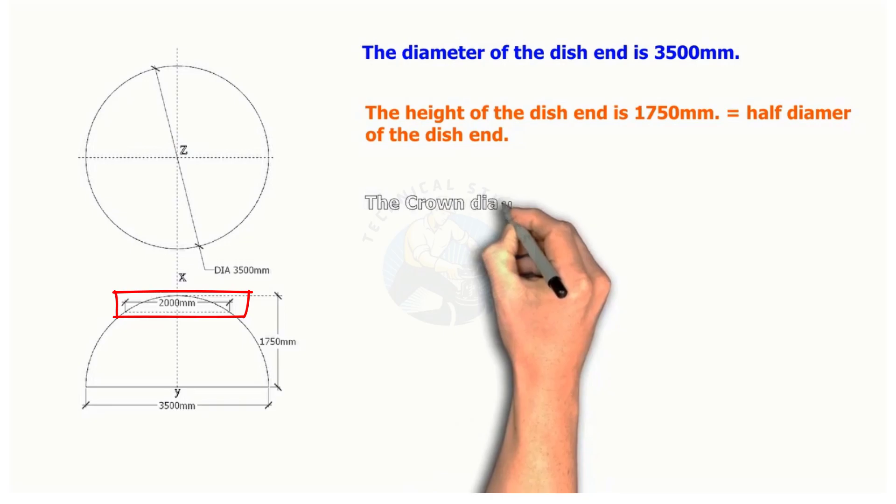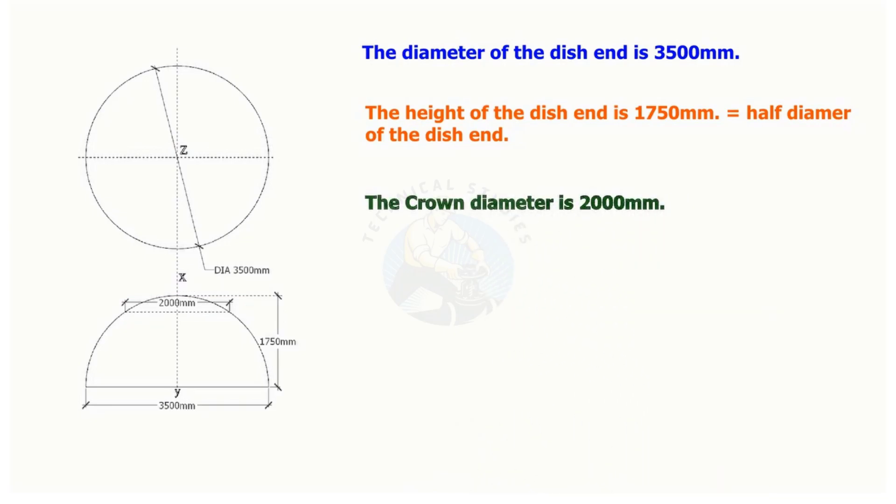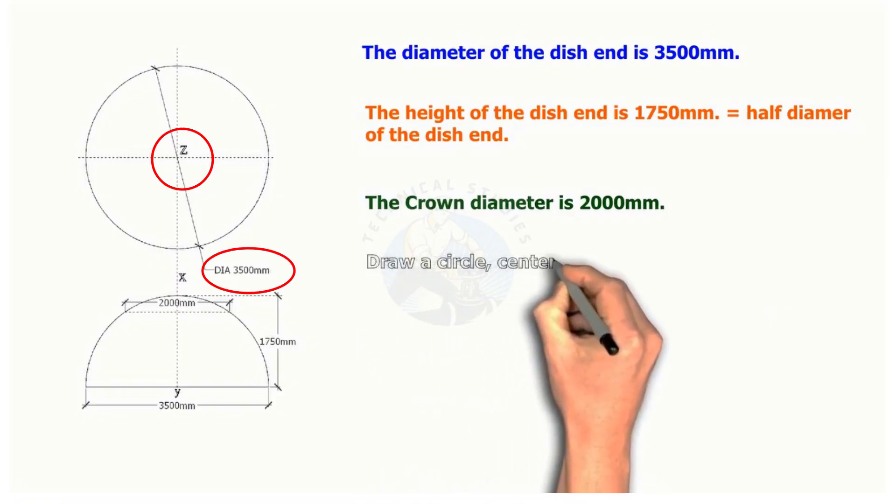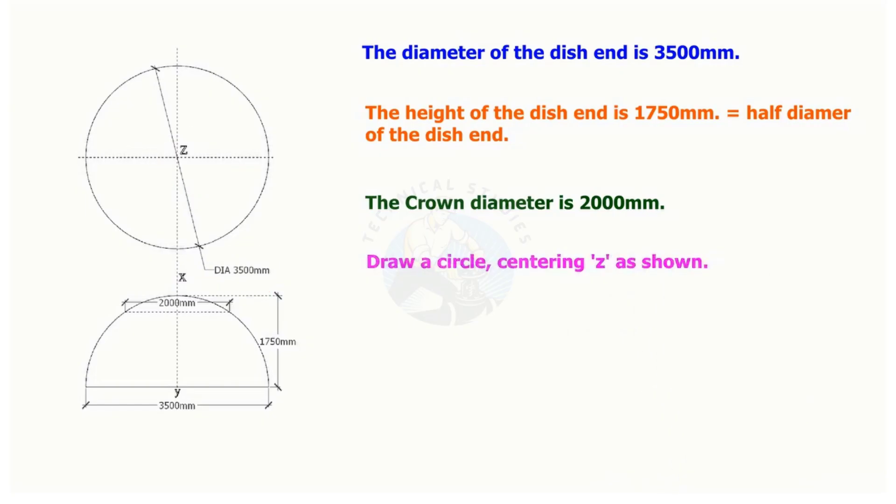Suppose the crown diameter is 2,000 millimeters. Using Z as the center, draw a circle with a 3,500 millimeters diameter. Draw a half circle as shown and draw the crown line.